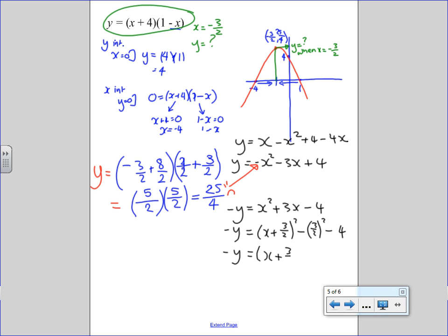So, this is X add 3 over 2 squared minus 3 over 2 squared minus 4, which is, this is minus Y, don't forget, not Y. X add 3 over 2 squared minus 9 over 4, squaring the top and the bottom, minus 16 over 4, minus Y is X plus 3 over 2 squared minus 25 over 4. Now, obviously, that's minus Y, not Y. I need to know what Y is, so I'll just multiply both sides by minus 1 again. So, I'm undoing the step that I did earlier. So, this will become negative, and this will become positive.